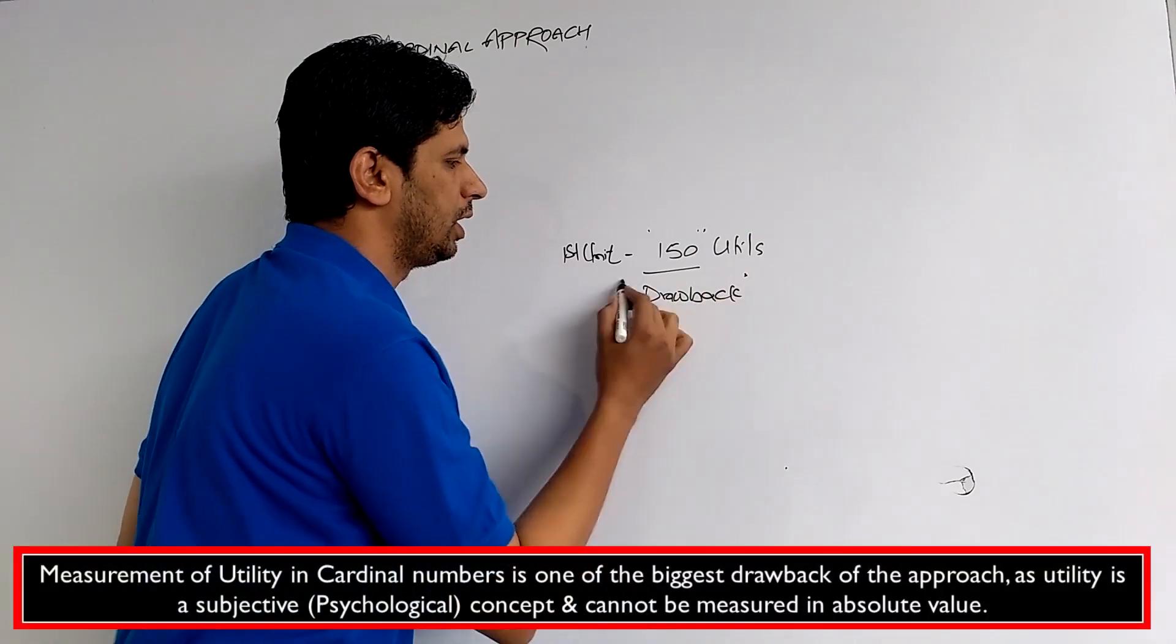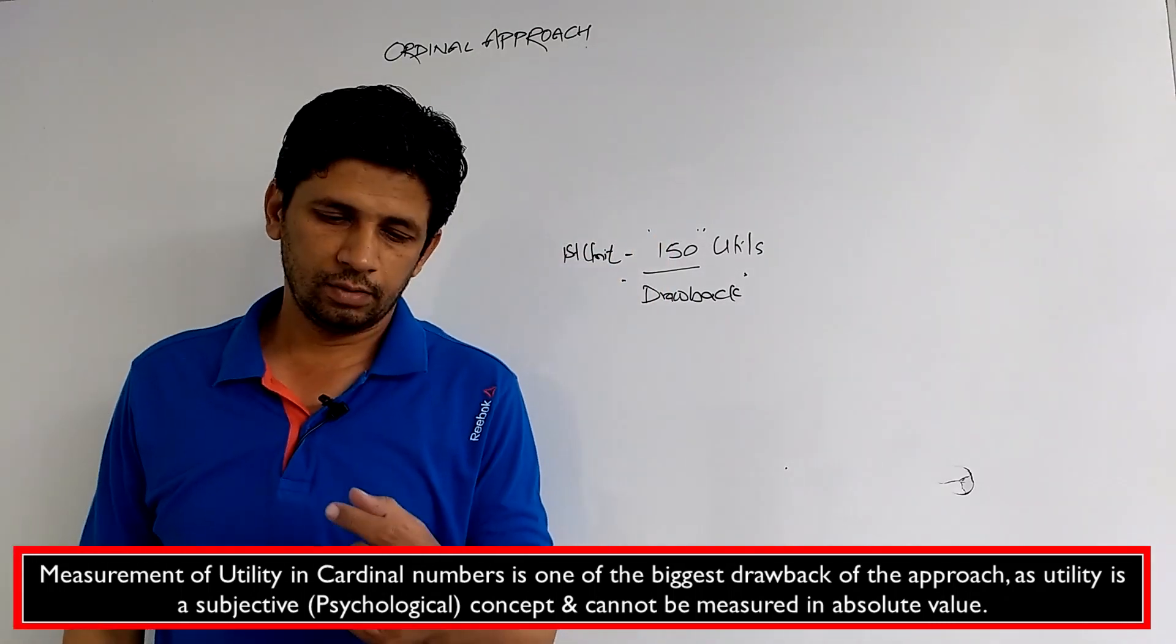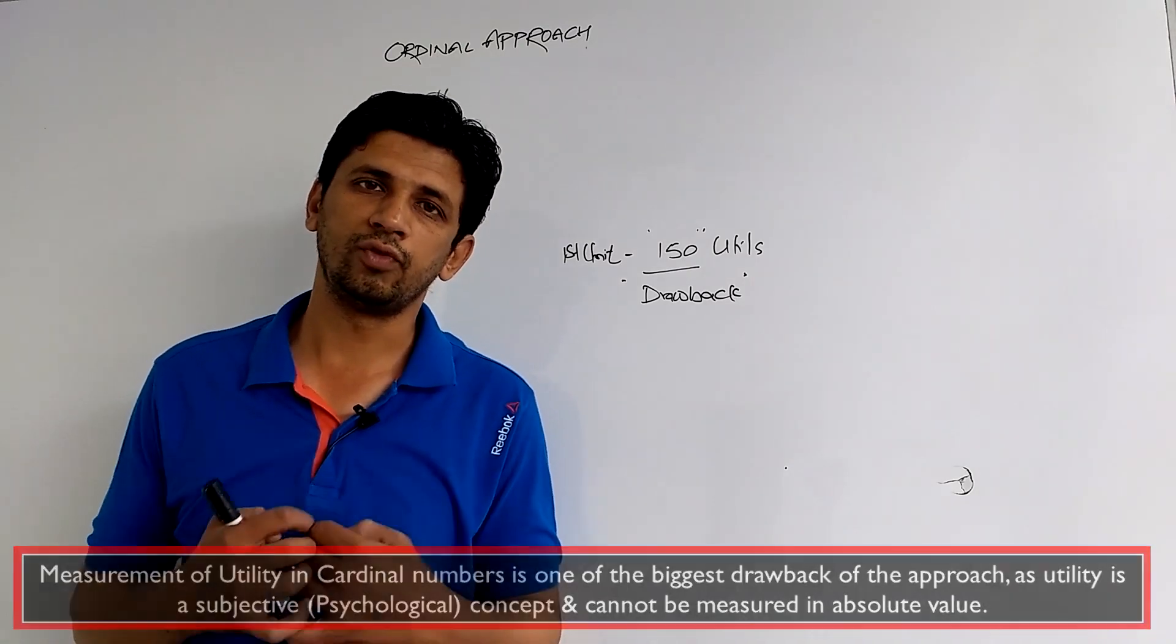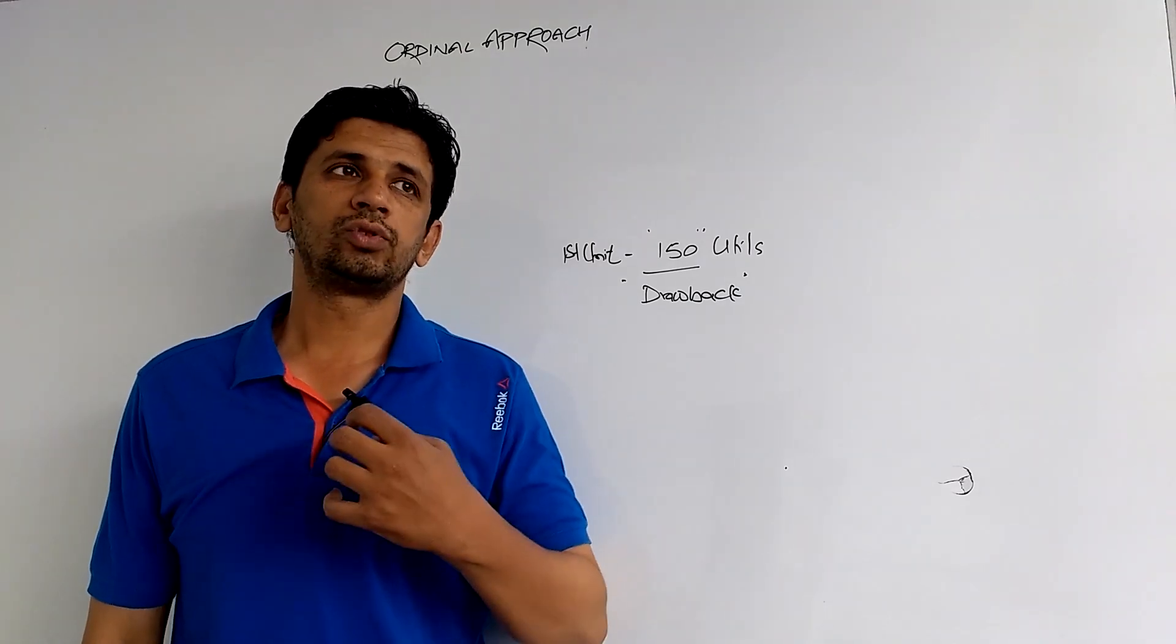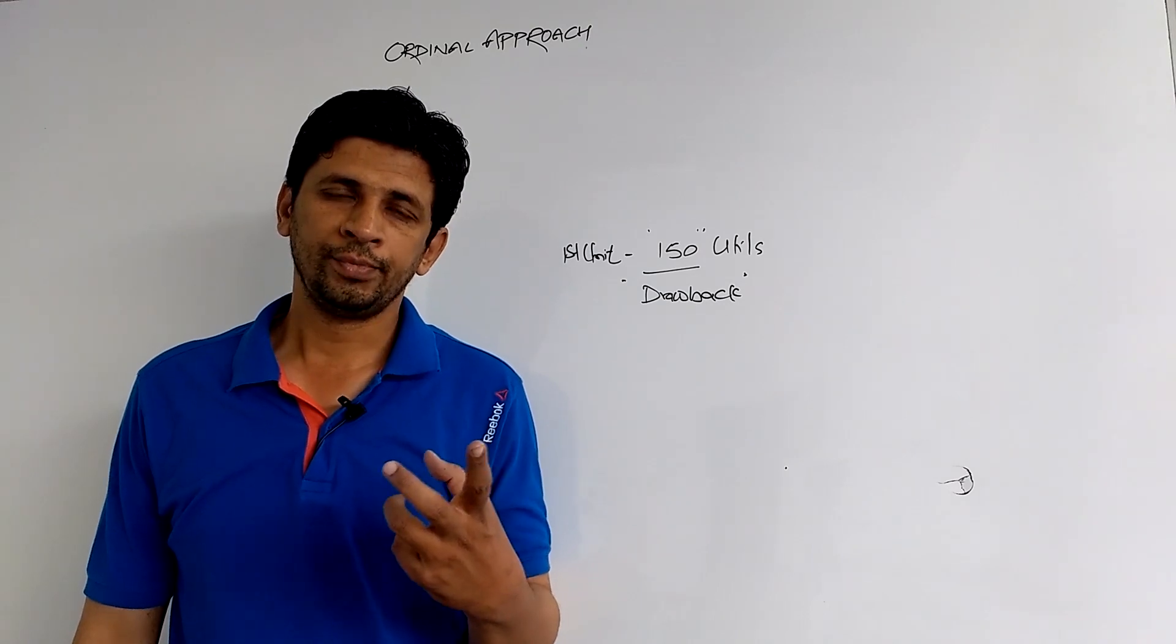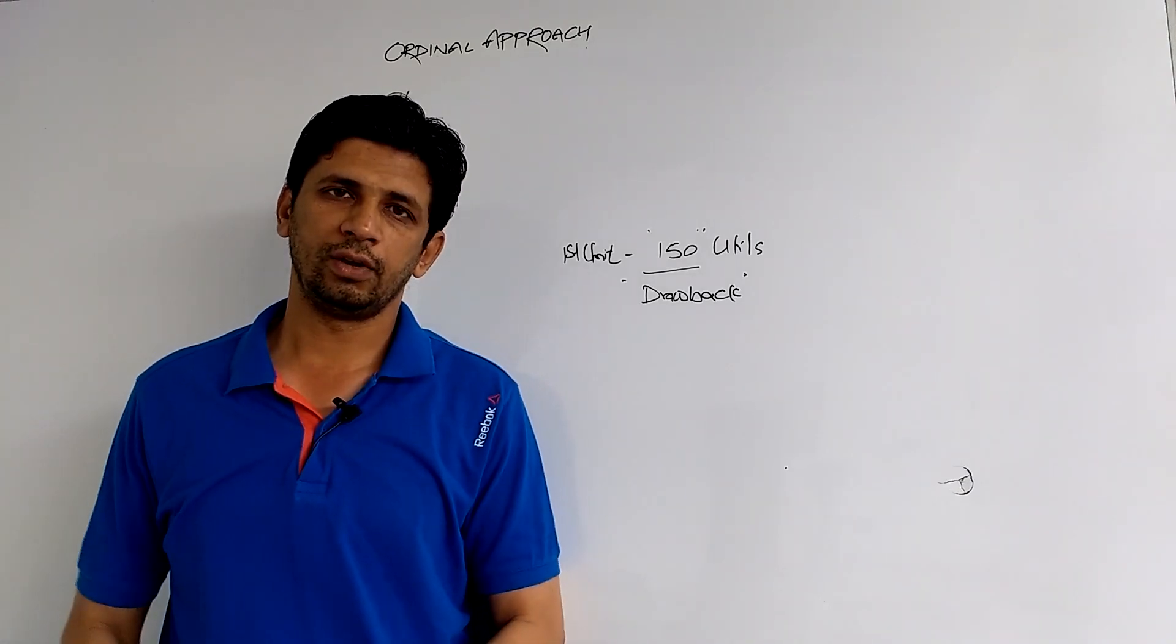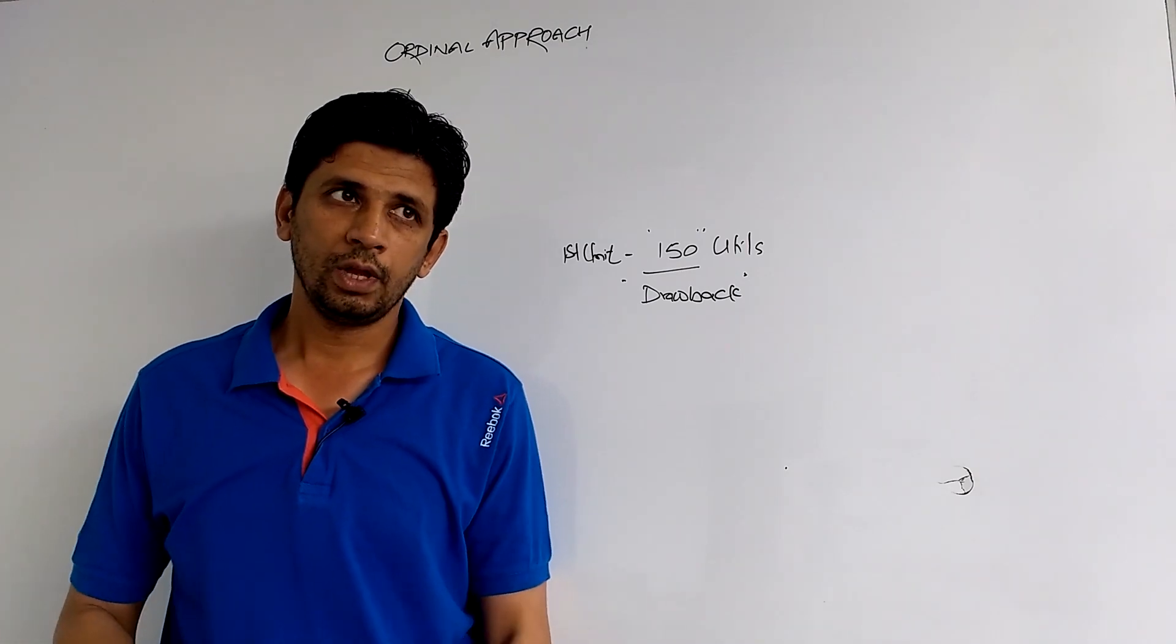We have already read this in the previous approach, that utility is a psychological concept. It is purely a psychological concept, and the consumer himself defines the utility - how many utils are actually obtained from commodity consumption. Like we said, first unit consumed, then we are getting total 150 utils. And for a common person, to define this thing practically is not possible.